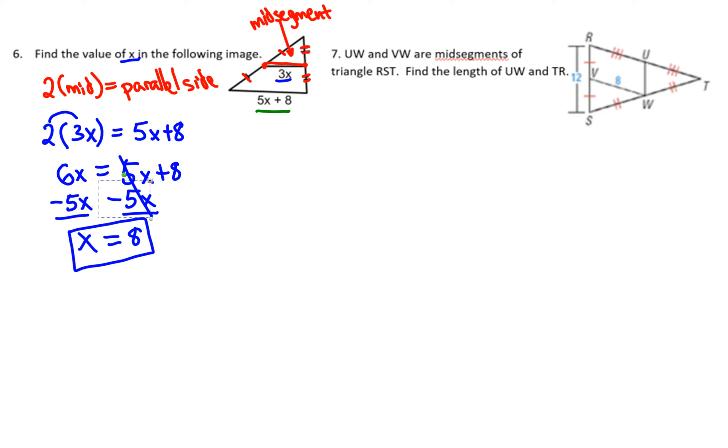This next problem says UW and VW are mid-segments of triangle RST. Let's identify them: UW is here and VW is here. Let's make these two separate colors to make it easier to see.